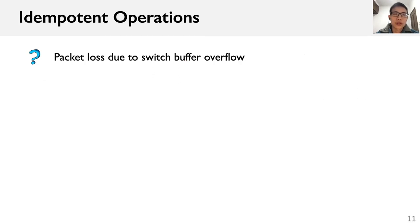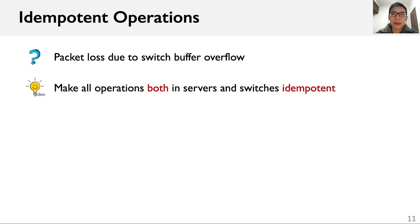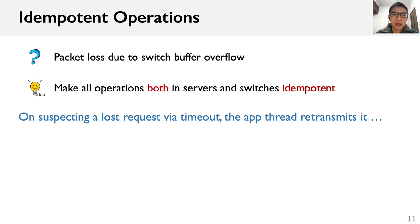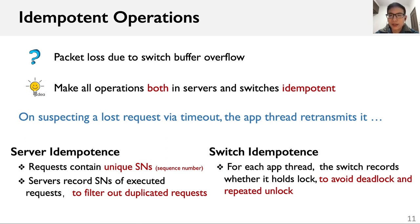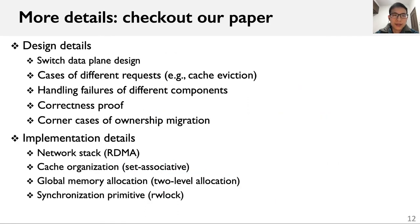To handle packet loss, we make all operations both in servers and switches idempotent. On suspecting a lost request via timeout, the application thread retransmits it. To realize idempotent server operations, we assign a unique sequence number for each request, and servers record sequence numbers of executed requests to filter out duplicated requests. To realize idempotent switch operations, for each application thread, the switch records whether it holds a lock to avoid deadlocks and repeated unlocks. Due to time limits, we omit other design and implementation details — please check out our paper for more.